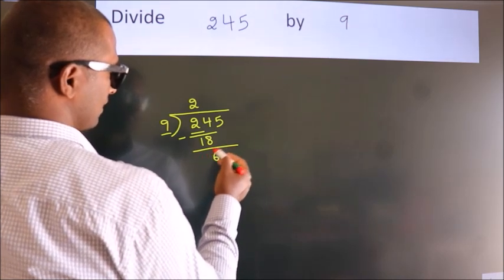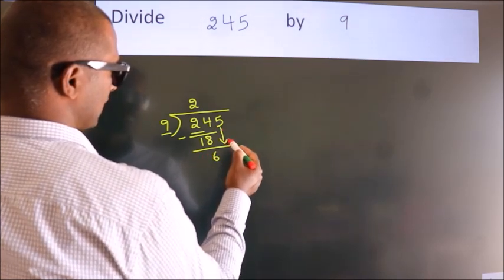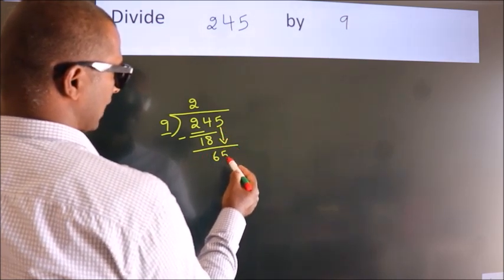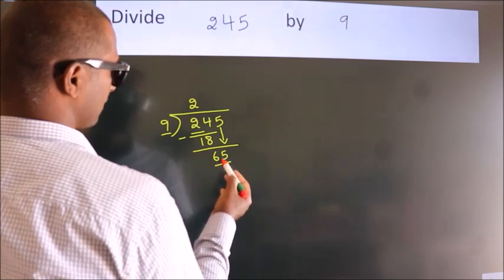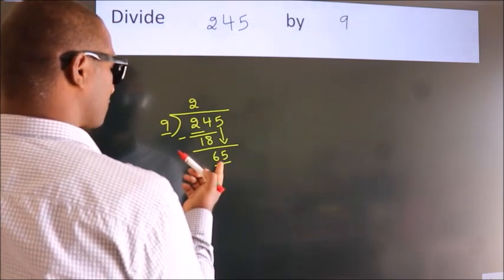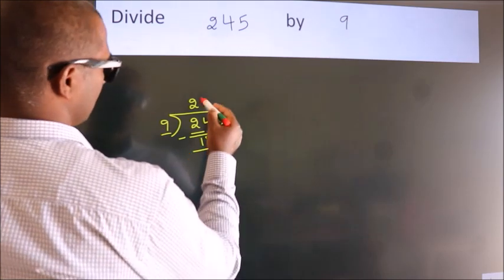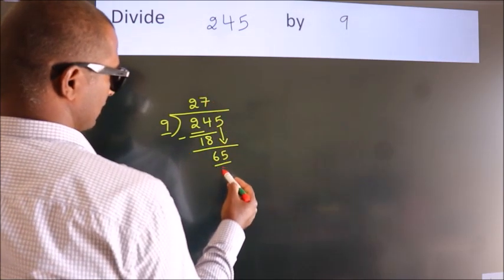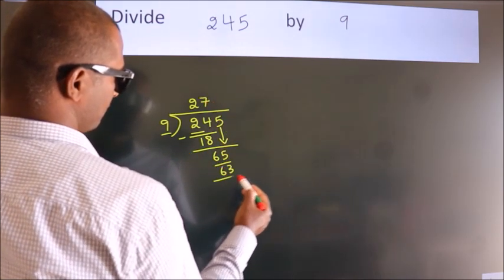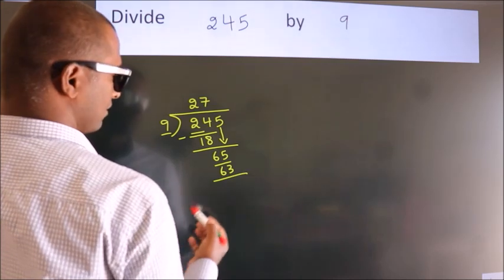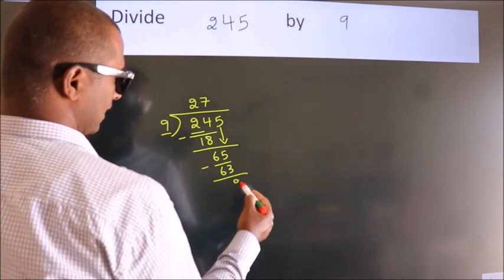After this, bring down the beside number. So 5 down. So 65. A number close to 65 in the 9 table is 9 times 7 is 63. Now we subtract. We get 2.